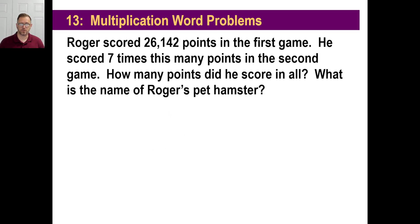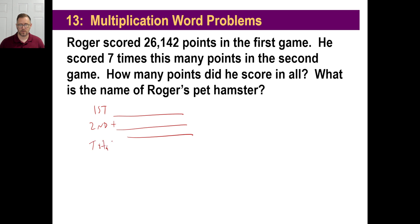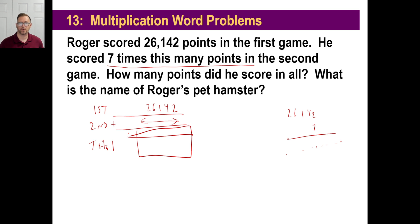Roger scored 26,142 points in the first game. He scored seven times this many points in the second game. How many points did he score in all? How many points did he score in all? That means in the first game he scored this, and in the second game he scored seven times this many points. So you're going to go 26,142 times 7, find out the answer and put it there. Then you're going to add those two together — that's going to give you your total.